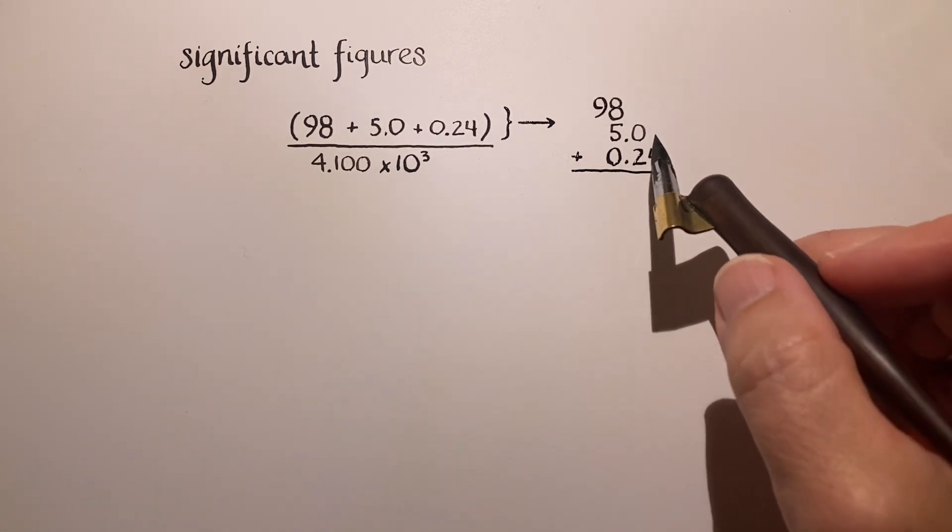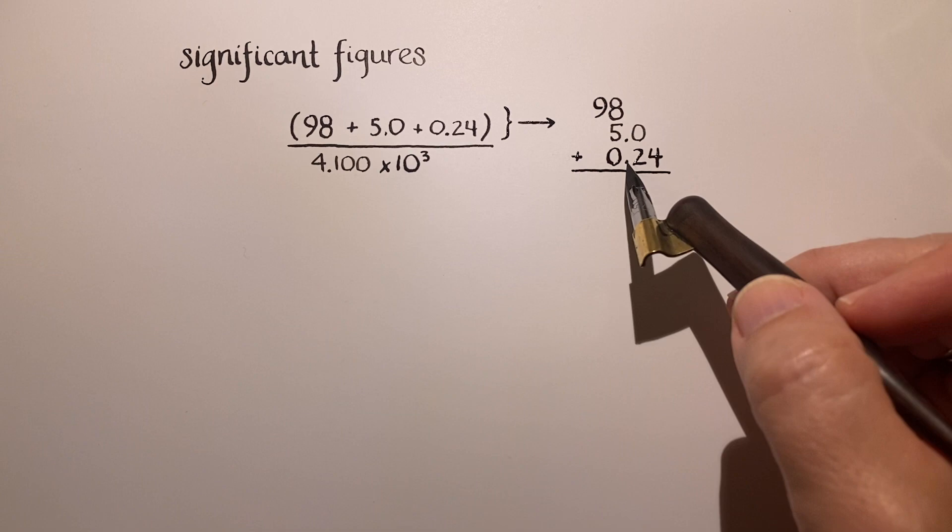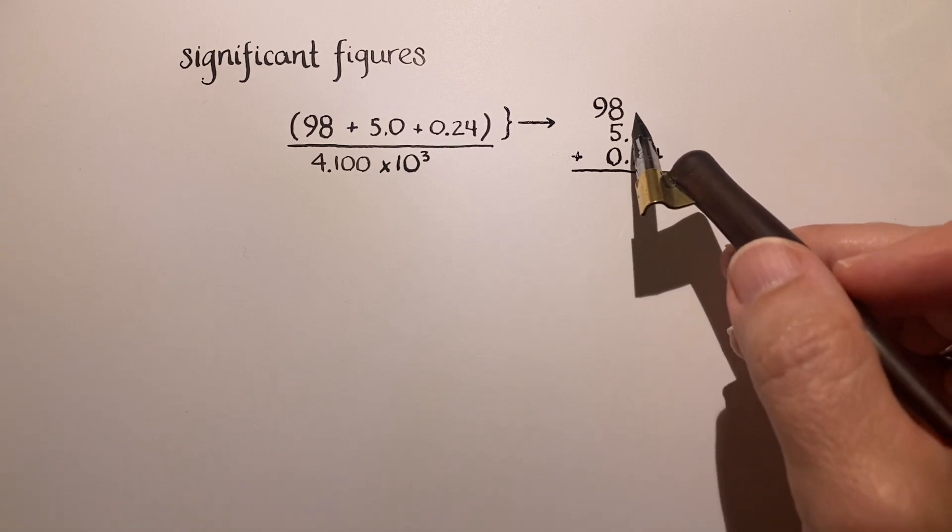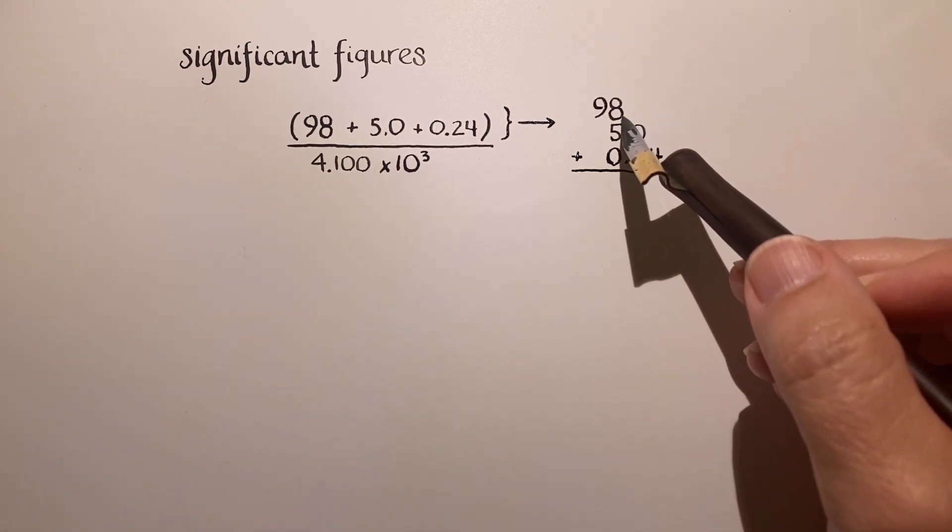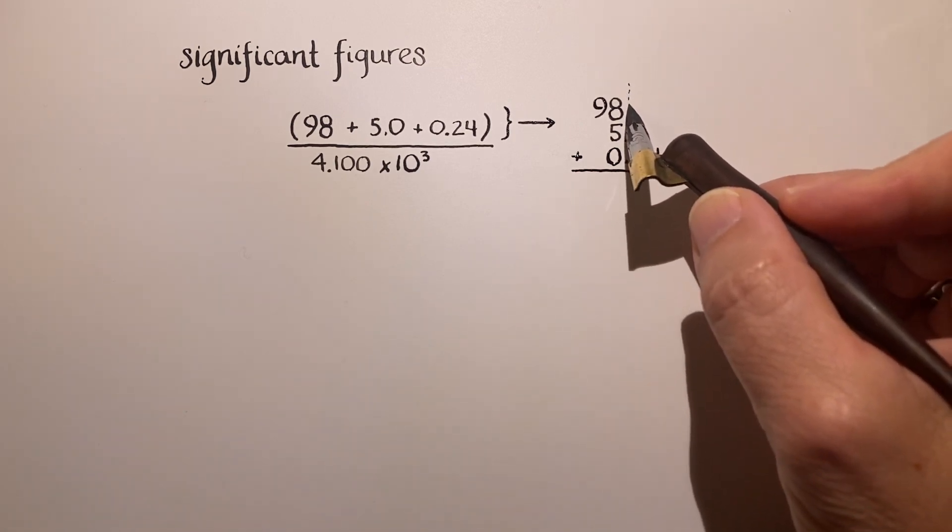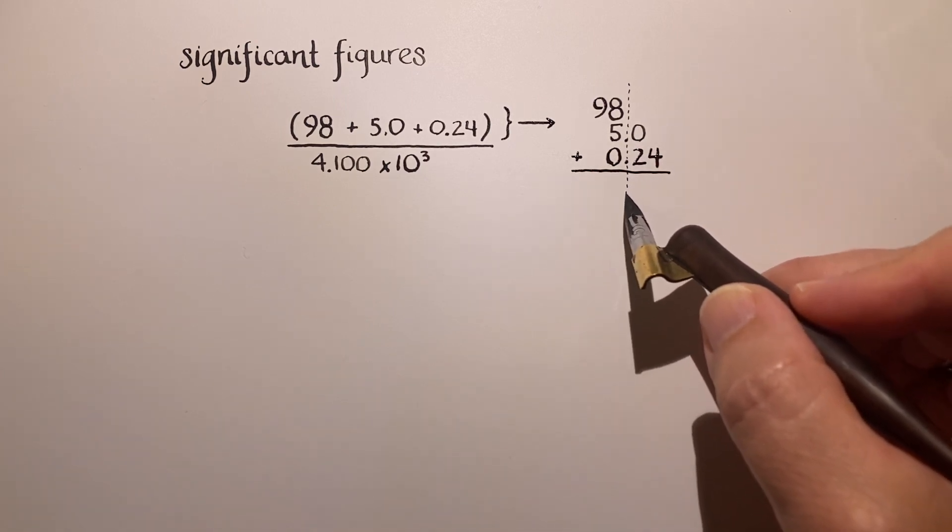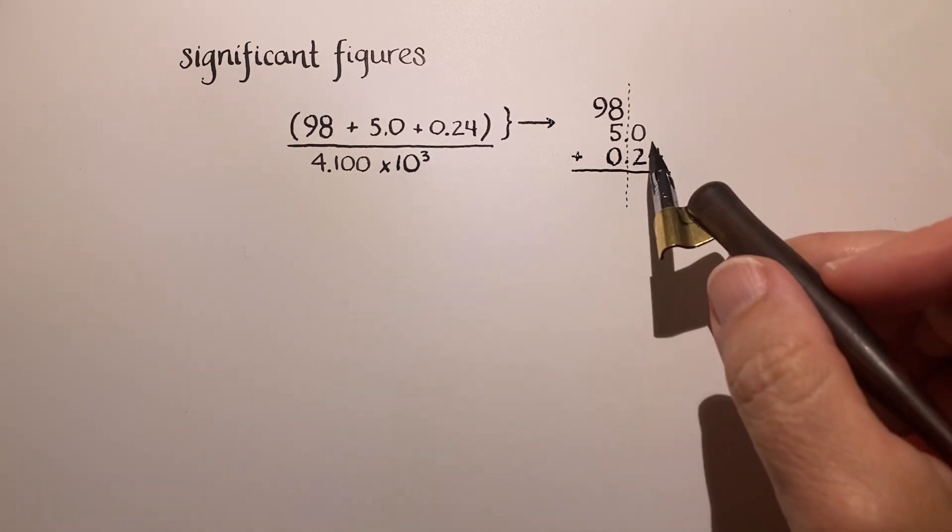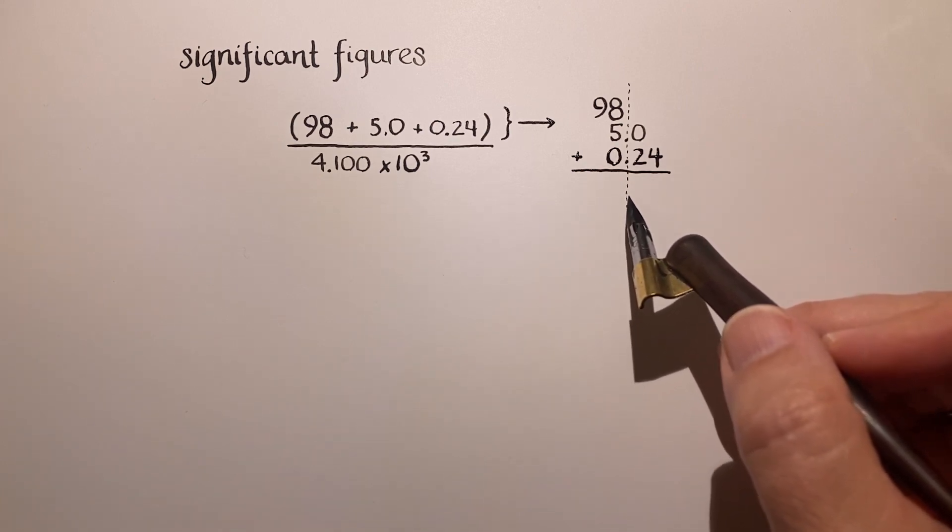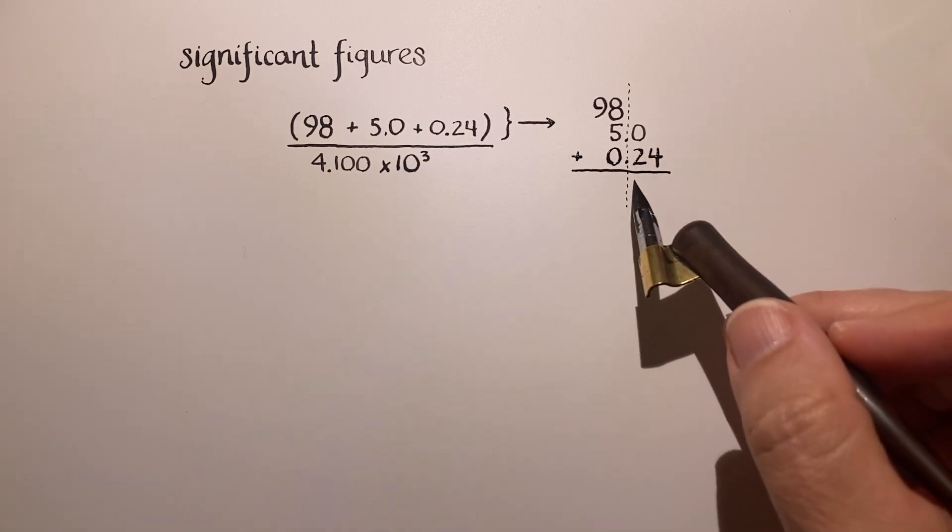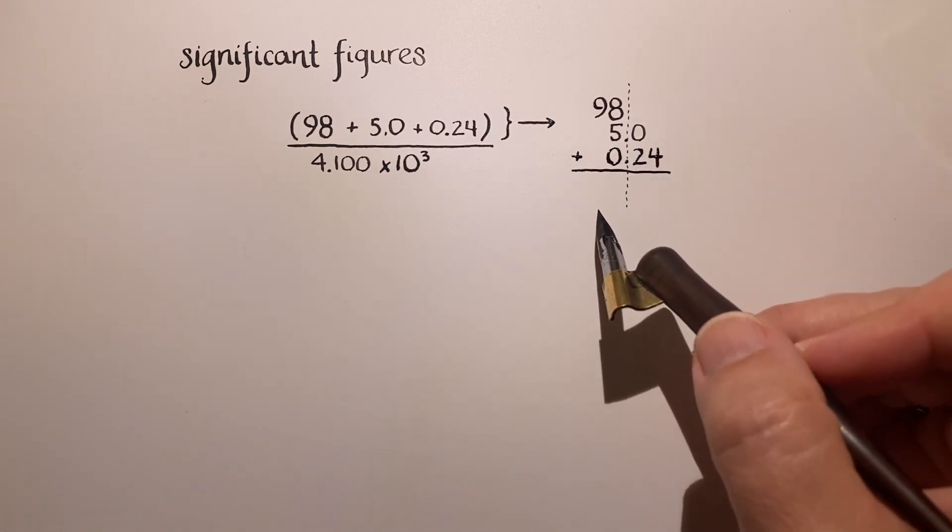Okay, now we can add them up and see what happens here. So with addition, and this is also true for subtraction, we only get as many values past the decimal point as the number with the least number of values past the decimal point. And in this case, that's the 98 that doesn't have any significant figures past the decimal point. So what I do is I just draw this lightly colored dashed line to remind myself that the final value here will not have any numbers past that line. Alright, nothing's going to appear there, but we can add up all of these that are on this side of the line.